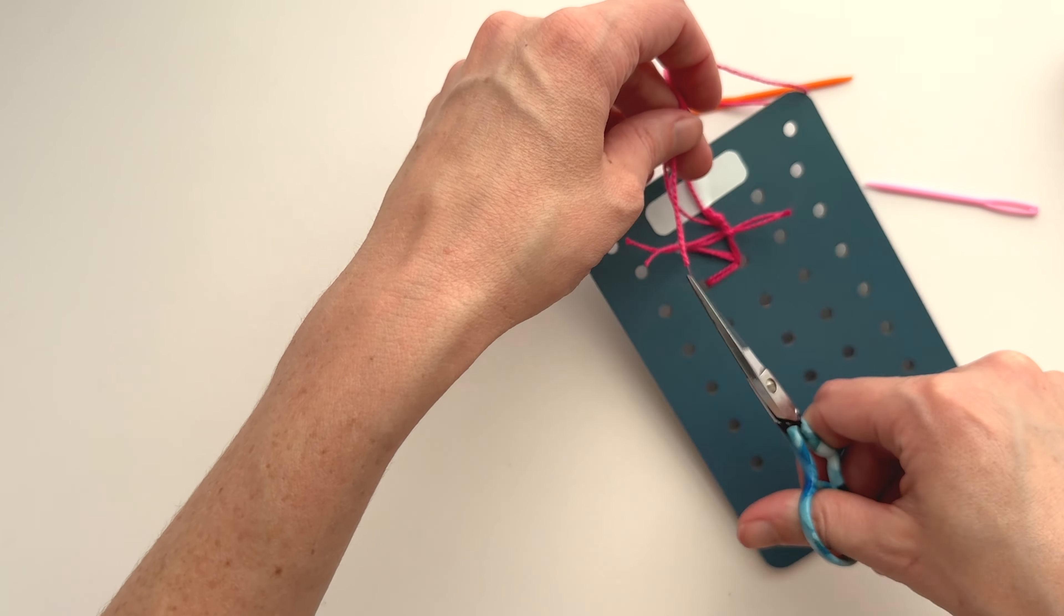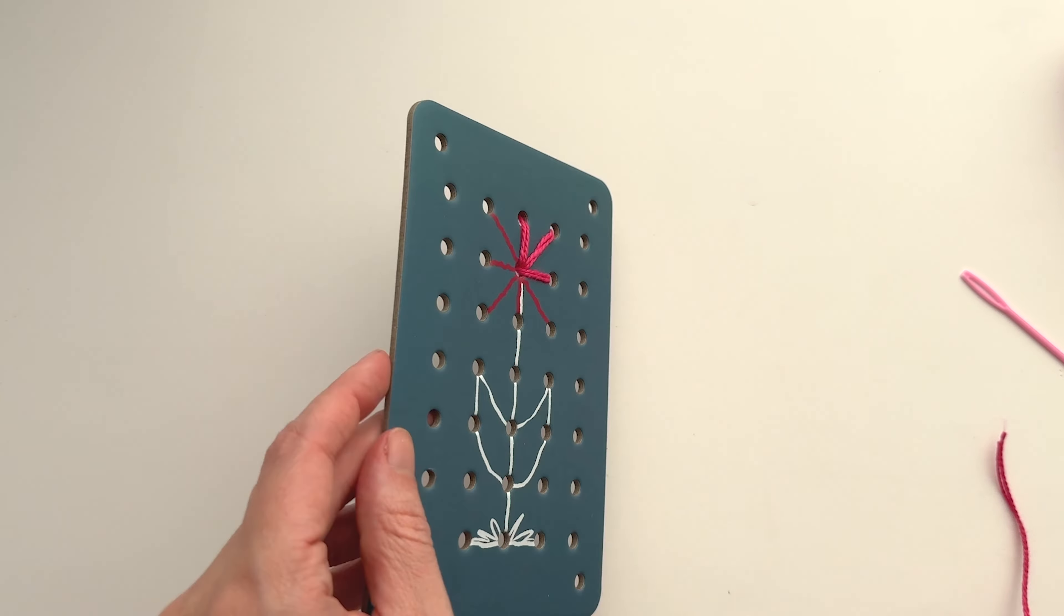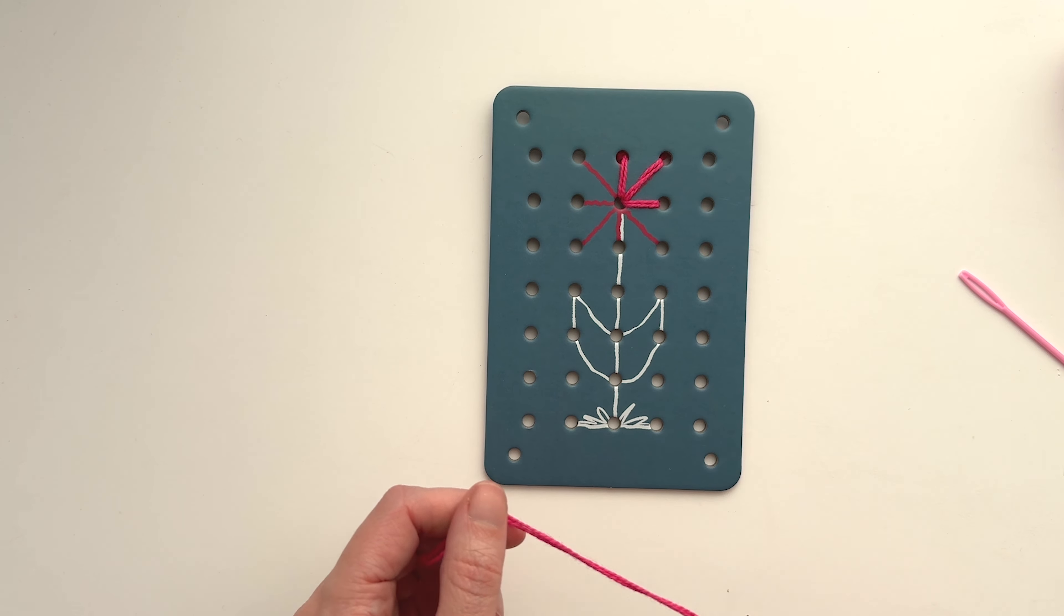Cut off the yarn and thread a new piece onto your needle. Secure it on the back and get started.